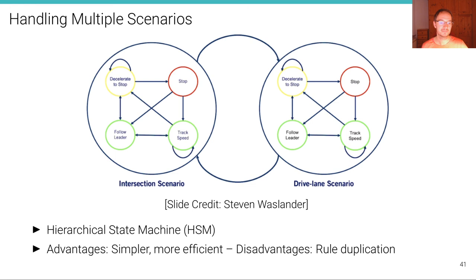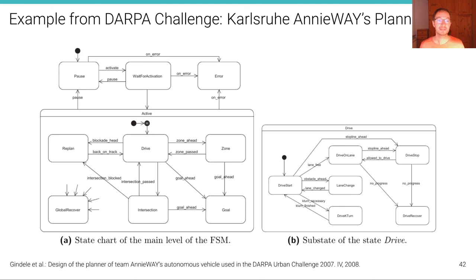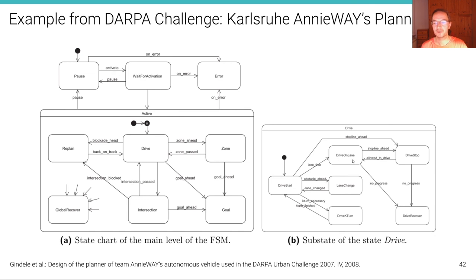Within each meta-state, we also have sub-states — yellow, red, green ones — between which we can transition internally. The advantage is that it's simpler, more efficient, and easier to understand. The disadvantage is that some rules may be duplicated, for example needing to decelerate and stop both at intersections and on straight roads. Here's a real example of such a hierarchical FSM from the DARPA challenge — the Karlsruhe planner — where at the main level you move between drive, replan, intersection, and zone states, and the drive state itself has sub-states like drive on lane, lane change, and drive turn.